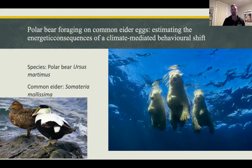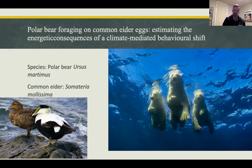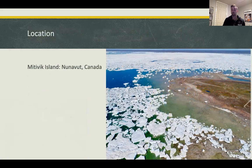The common eider is a ground-nesting species that goes to a specific island every year. Hundreds of thousands of them burrow and nest on the ground. Polar bears are well-known carnivores in the Arctic that use ice floes to move around and hunt. Now that the ice is melting, they are trying to find new optimal foraging opportunities, and this study examines whether eider eggs can work for them.